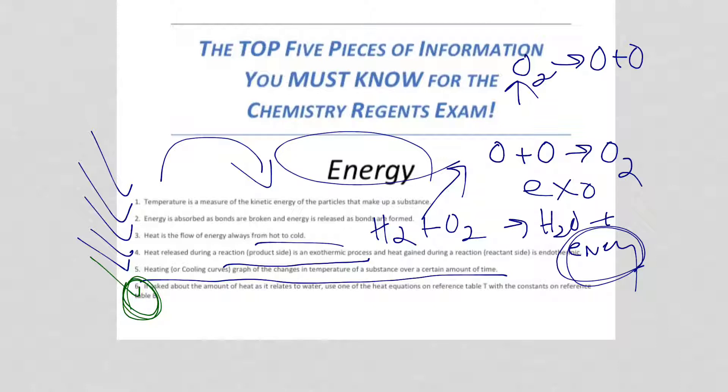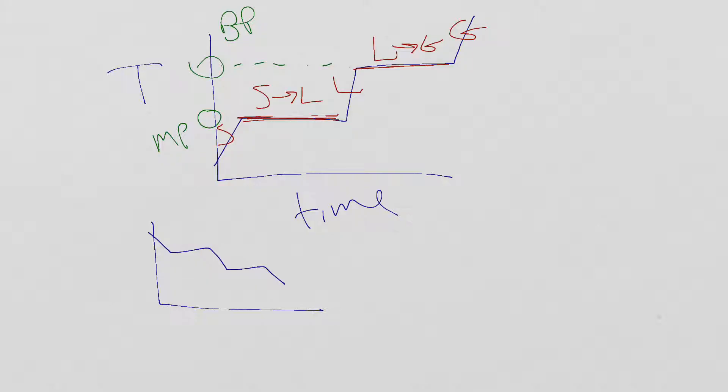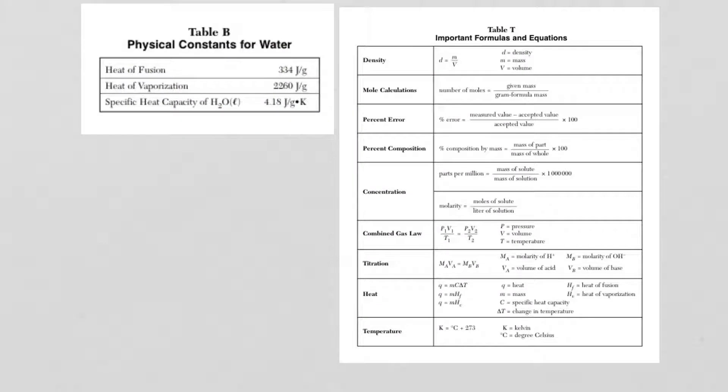The calorimetry equations are on reference table T. They're known as the heat equations. These constants for these equations on reference table B, on the front of the reference tables, are the constants for water.